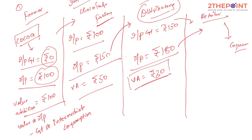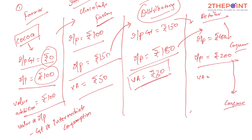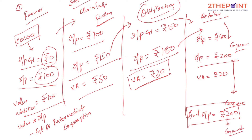The retailer receives the input at 180 rupees. He incurs electricity bills and labour costs. Finally, the consumer pays 200 rupees. The final output in this economy is rupees 200 worth of goods consumed by the consumers.